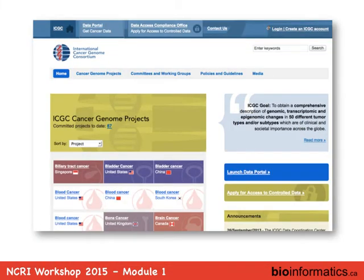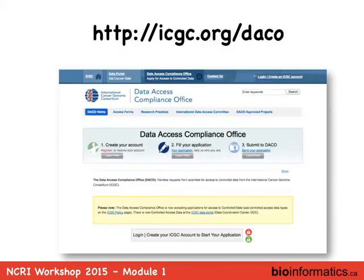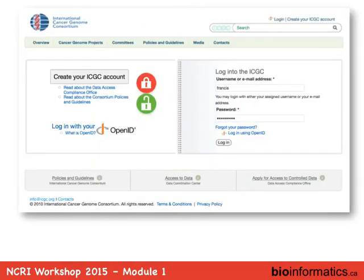To get access to controlled access data, you fill out a form detailing your project, contact people, technology, and confirm that you'll keep data secure. You sign a PDF which must also be signed by an authority at your institution — someone who could dismiss you should you break the rules — and you send it to the DACO office. The DACO office consists of legal experts and bioethicists who review your application and grant access.